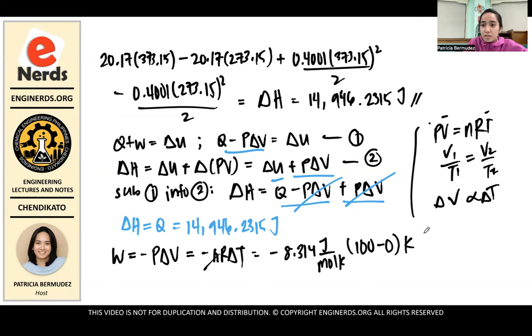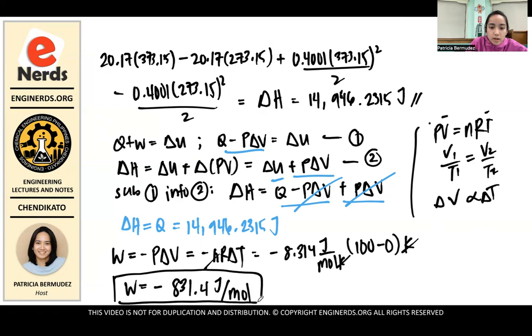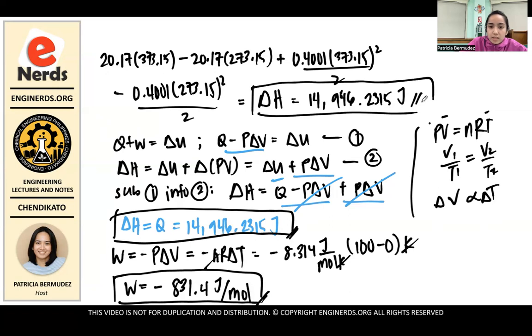So R is, let's use negative 8.314. So negative, R is 8.314 joules per mole kelvin. Then the change in temperature is 100 minus 0 kelvin. Because the change in temperature in Celsius is also the change in temperature in kelvin. So the answer here is, work is negative 831.4 joules per mole. Because the kelvin will cancel. So joules per mole. This is the answer. This is the answer for Q. And this is the answer for H.